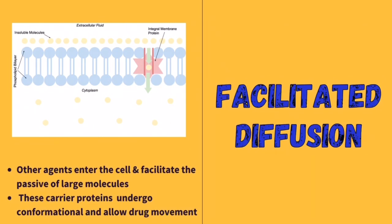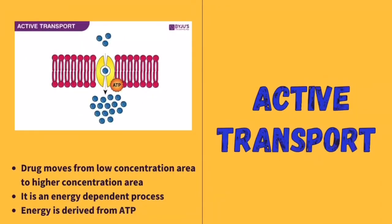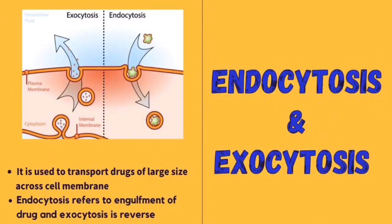The second is facilitated diffusion. In facilitated diffusion, carrier agents enter the cell and facilitate the passage of large molecules. These carrier proteins undergo conformational changes and allow drug movement. The third is active transport, where the drug moves from a low concentration area to a higher concentration area.